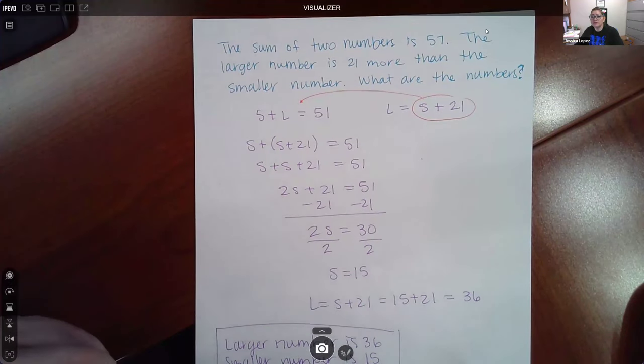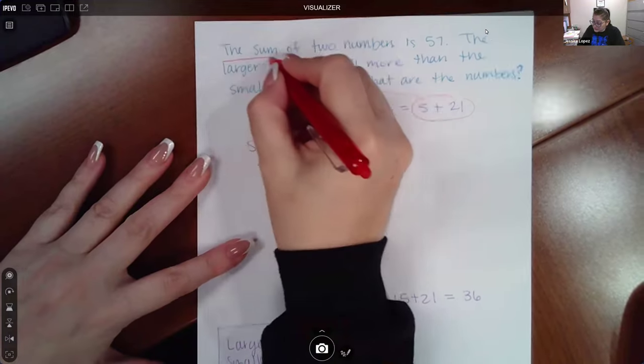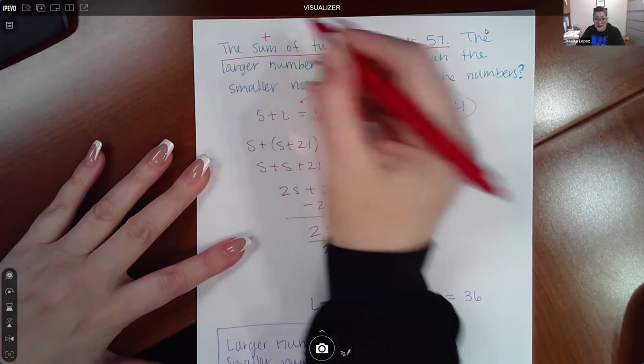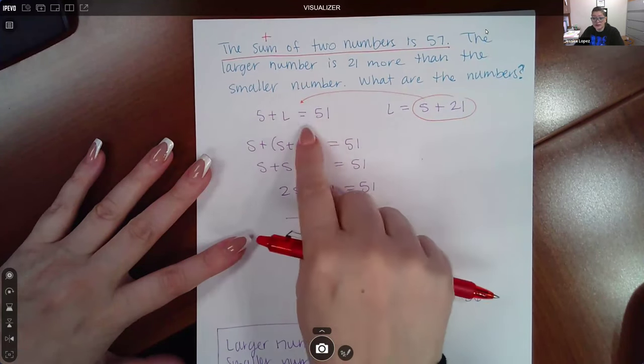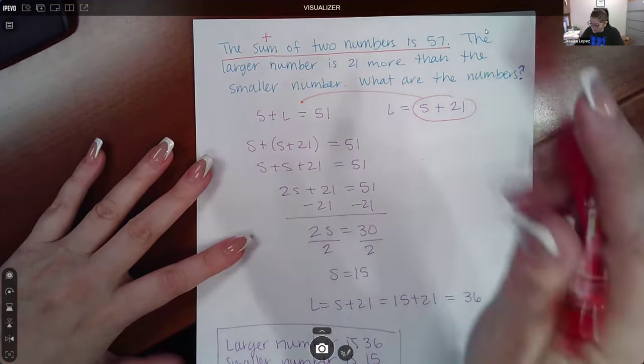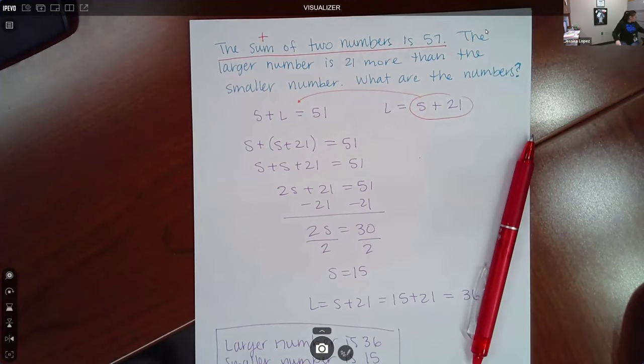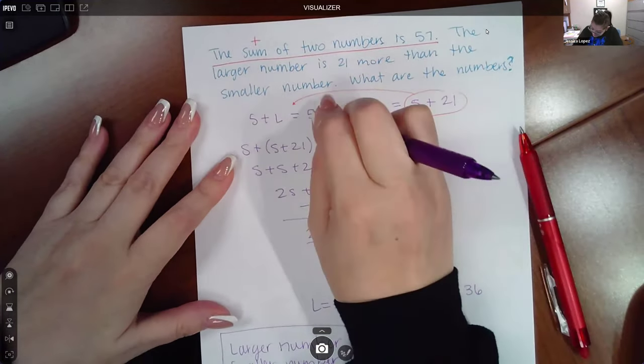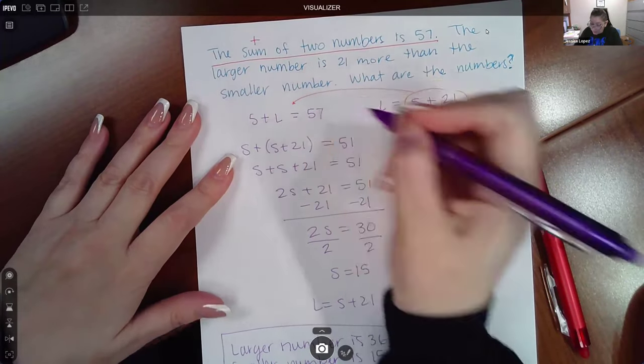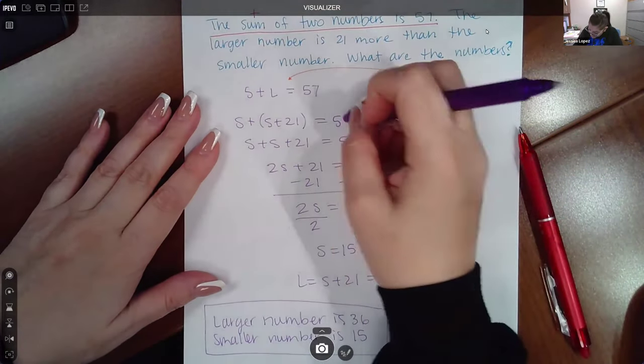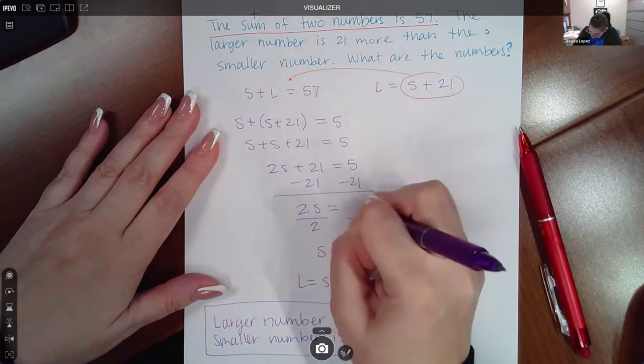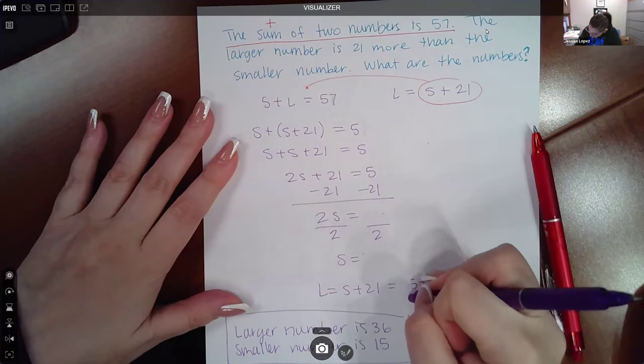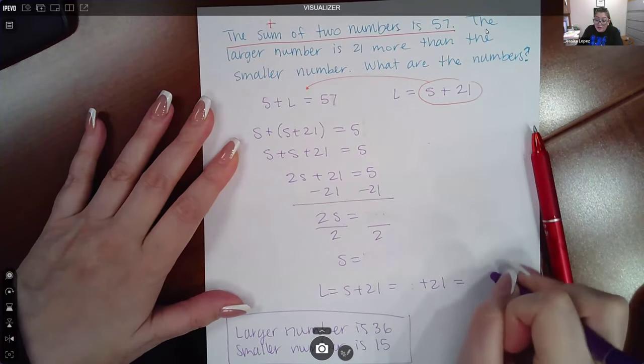This one says the sum of two numbers is 57. So remember that first sentence gives us an equation. Sum means to add. So we're adding two numbers and it's going to equal 57. And I think I have an error here. I put one. So let me grab my purple pen. We'll change this because it should have been 57. I didn't understand my own writing and I changed that problem. So I will make the corrections as we get further along.